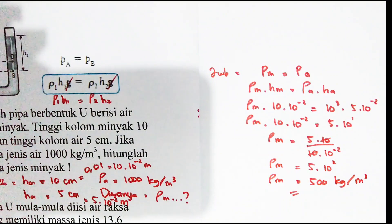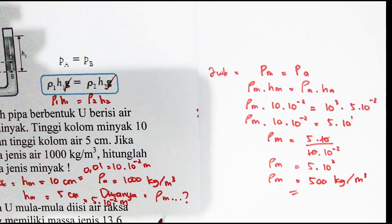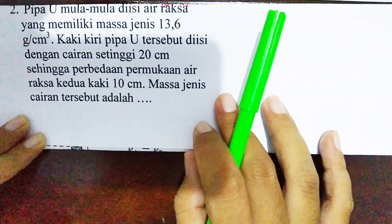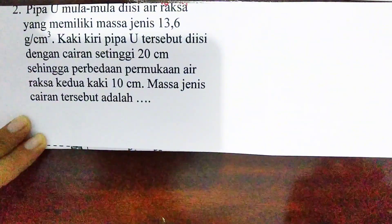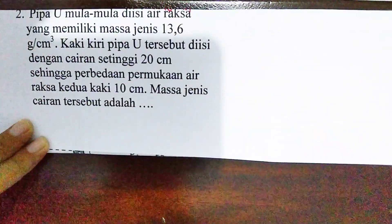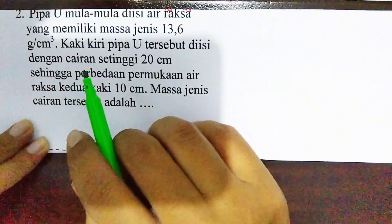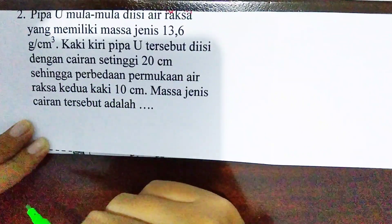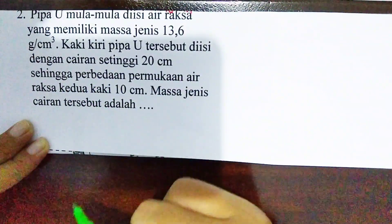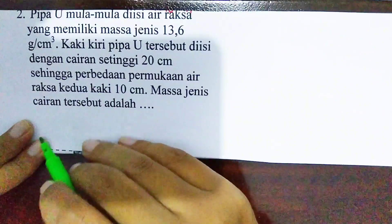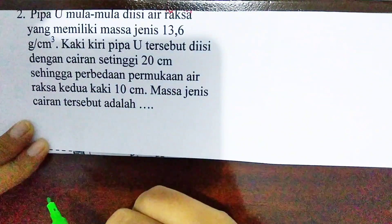Sama seperti ketika kita mengerjakan soal-soal yang lain. Ada contoh soal yang lain — masih di materi pipa U. Pipa U mula-mula diisi air raksa yang memiliki massa jenis 13,6 gram per cm pangkat 3. Kaki kiri pipa U tersebut diisi dengan cairan setinggi 20 cm, sehingga perbedaan permukaan air raksa kedua kaki adalah 10 cm. Massa jenis cairan tersebut adalah?